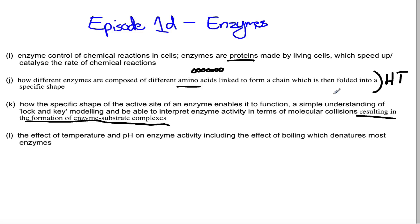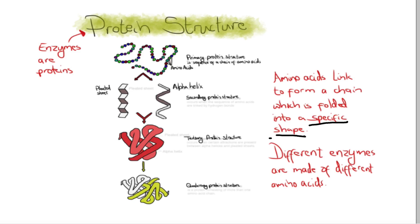The specific shape of the active site enables it to function, a simple understanding of the lock and key model and to be able to interpret enzyme activity in terms of molecular collisions resulting in the formation of enzyme substrate complexes. So what they're saying there is the substrate and the enzyme are going to be randomly moving around in the liquid substance, in the aqueous insides of the cell, for example in the cytoplasm.